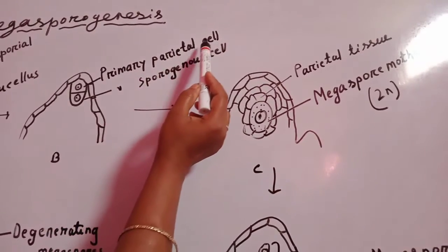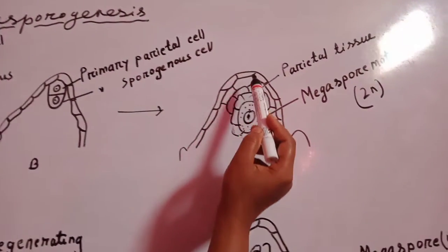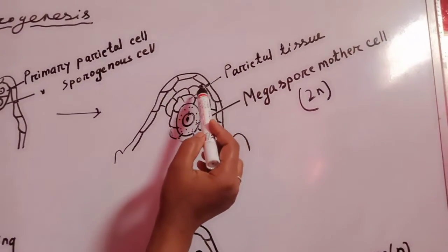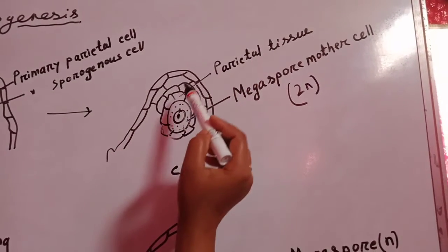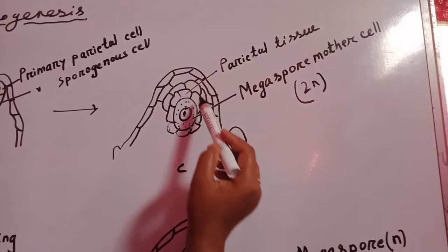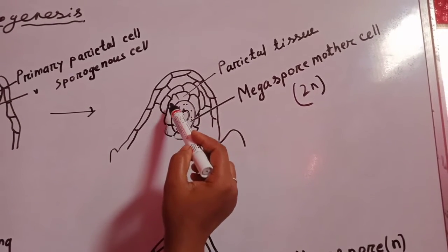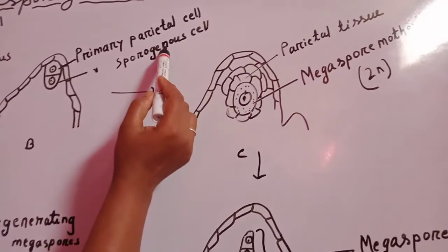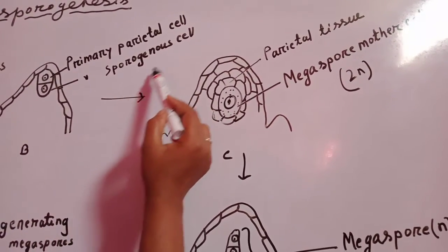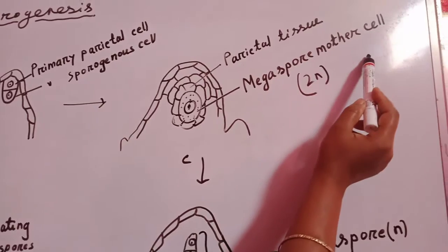The primary parietal cells divide several times to form parietal tissue, which further forms the wall of the female gametophyte. The primary sporogamous cells behave as the megaspore mother cell.